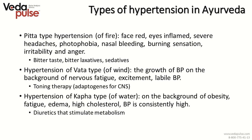Types of hypertension in Ayurveda: Pitta type of hypertension presents with red face, inflamed eyes, severe headaches, photophobia, nasal bleeding, burning sensation, irritability and anger. Helpful here are bitter taste, bitter laxatives, and sedatives. Vata type hypertension causes a rise in blood pressure on the background of nervous fatigue and excitement; beneficial here is toning therapy with adaptogenes for the central nervous system. Kapha type hypertension — or hypertension of water — occurs on the background of obesity, fatigue, edema, high cholesterol, and constantly high blood pressure; diuretics that stimulate metabolism are recommended.